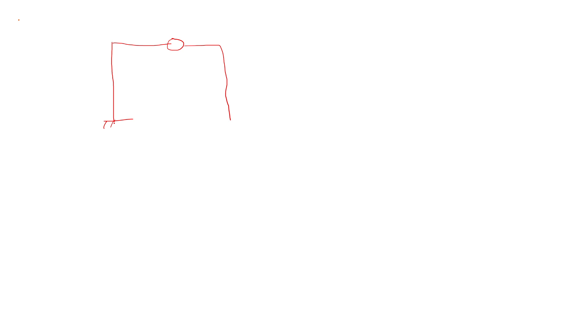This is a 2-story structure and we are going to solve this using the lambda mass method. The supports are fixed. The mass of the top story is m/2 and the first story is m. The stiffness of the first story is k and the second story is also k.